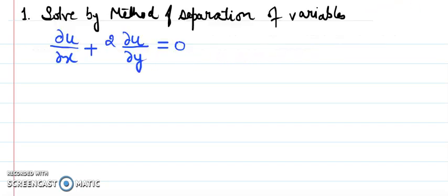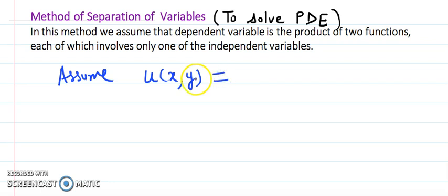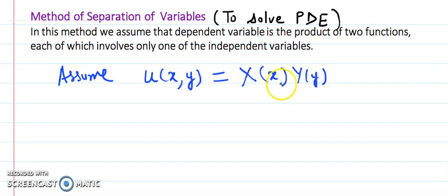For example, if I want to solve an equation and u is a function of two variables x and y, we assume that u(x, y) is the product of two functions: the first function is a function of x only, and the second function is a function of y only. Here capital X and capital Y are those functions, and they are independent of each other.